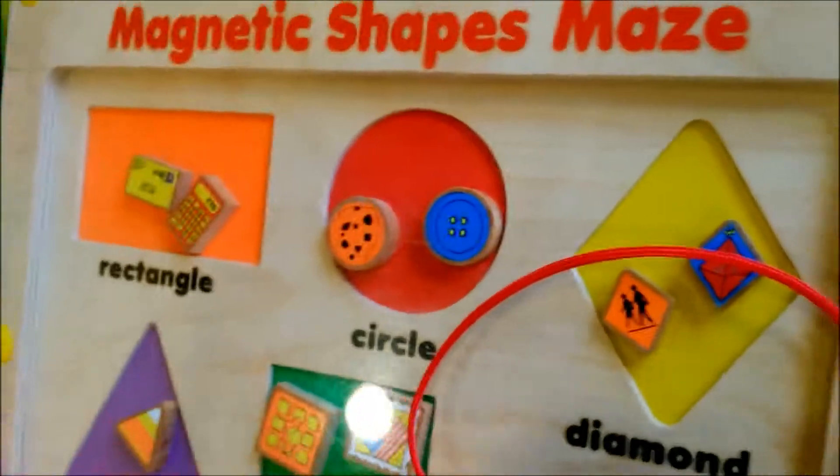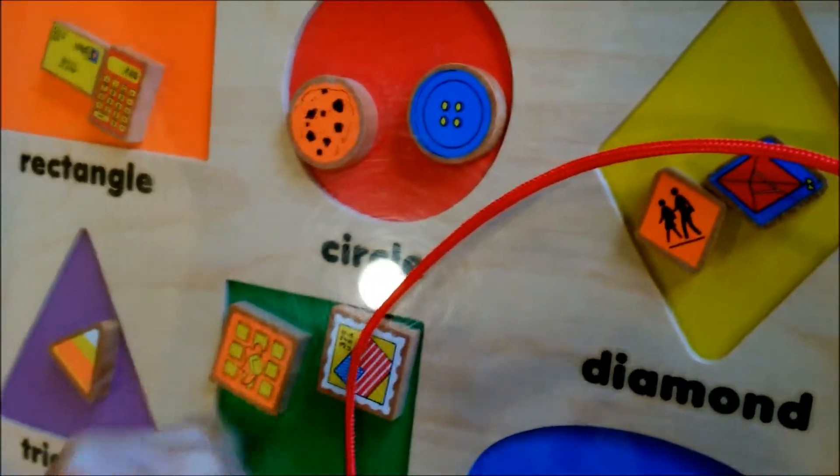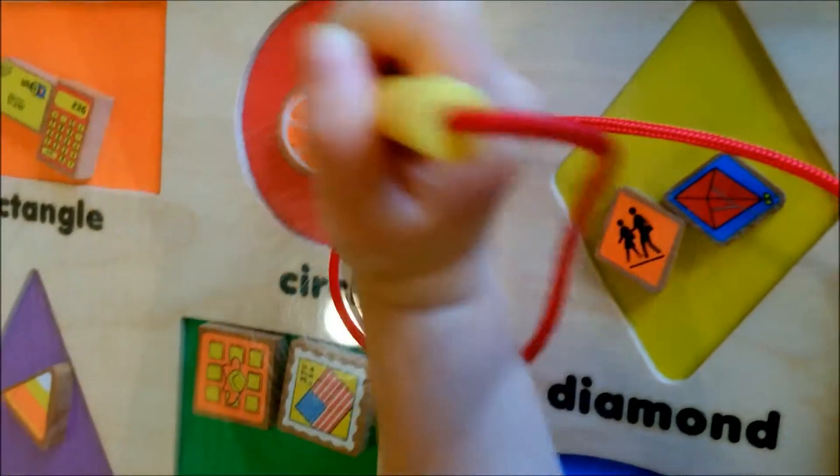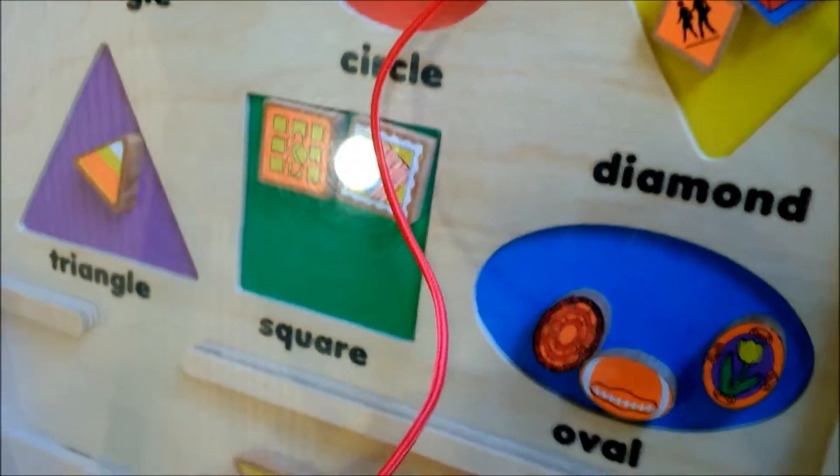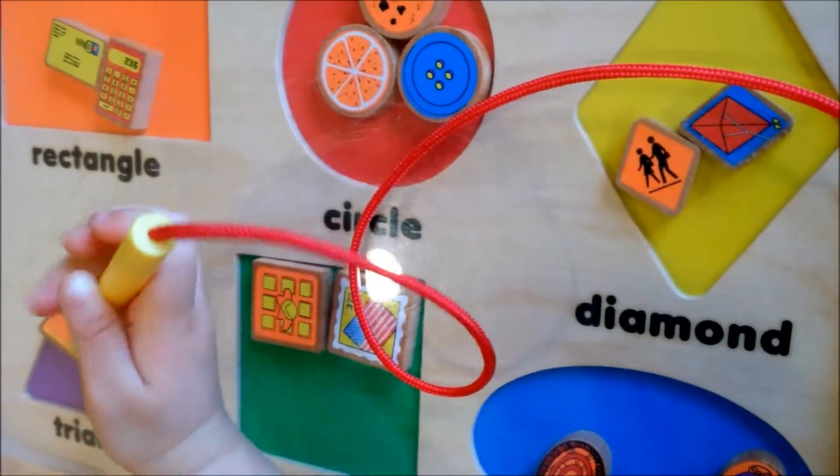Hello. Hello. Good job. So you sorted rectangle? Circle? What else? An oval? Good job, Mayola. What's next?